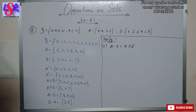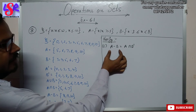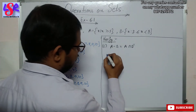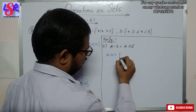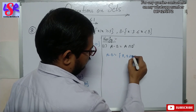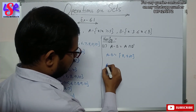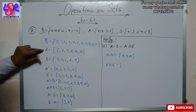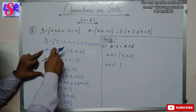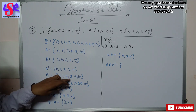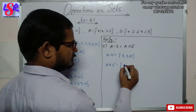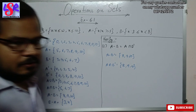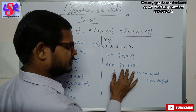Part C verifies A minus B equals A intersection B complement. A minus B = {8, 9, 10}. A intersection B complement is the common of A = {5,6,7,8,9,10} and B complement = {0,1,2,8,9,10}, which gives {8, 9, 10}. Both sets have the same elements, hence verified.